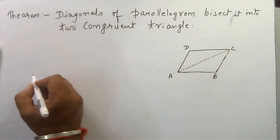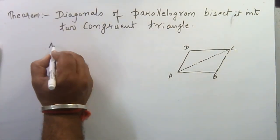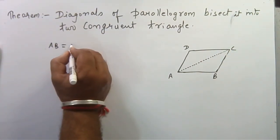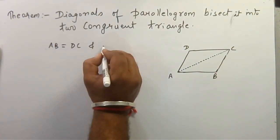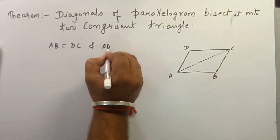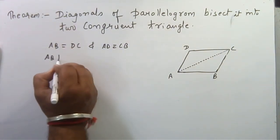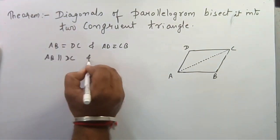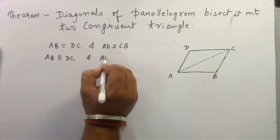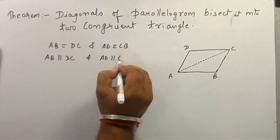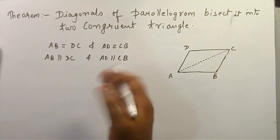a parallelogram. What is the property of a parallelogram? The opposite sides are equal: AB equals DC and AD equals CB. Apart from this, they are also parallel, so AB is parallel to DC and AD is parallel to CB. There are two ways